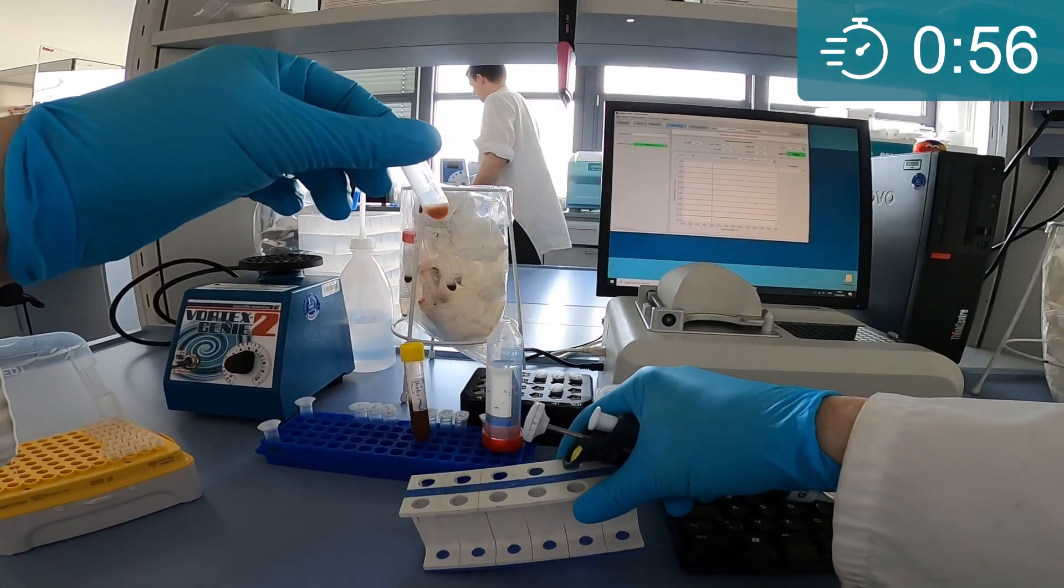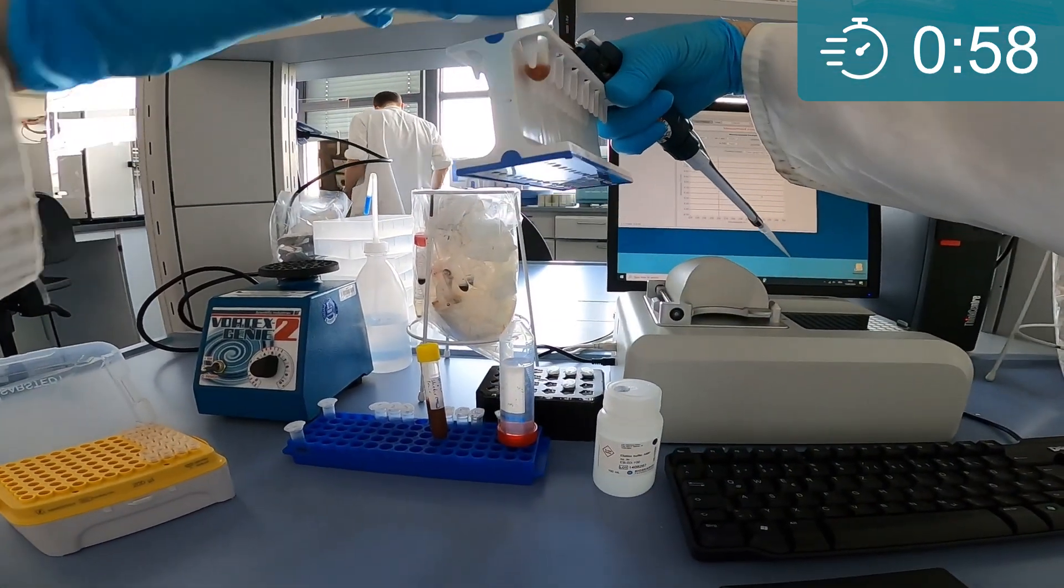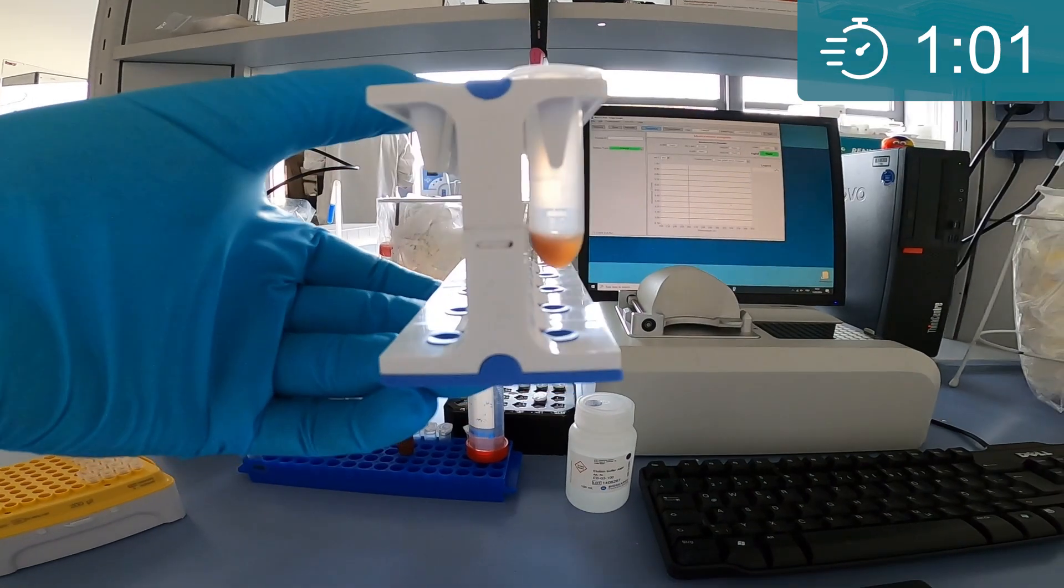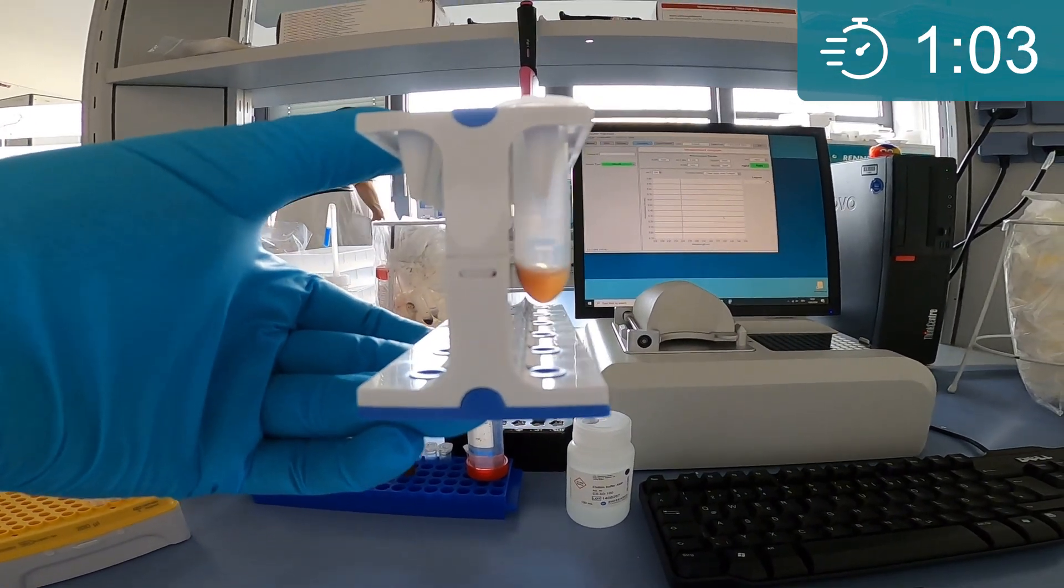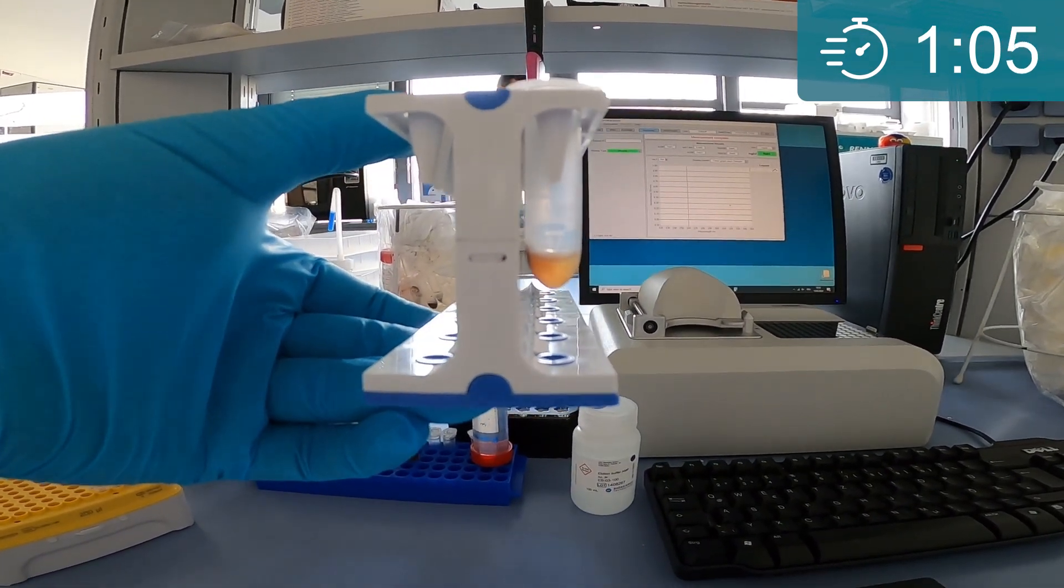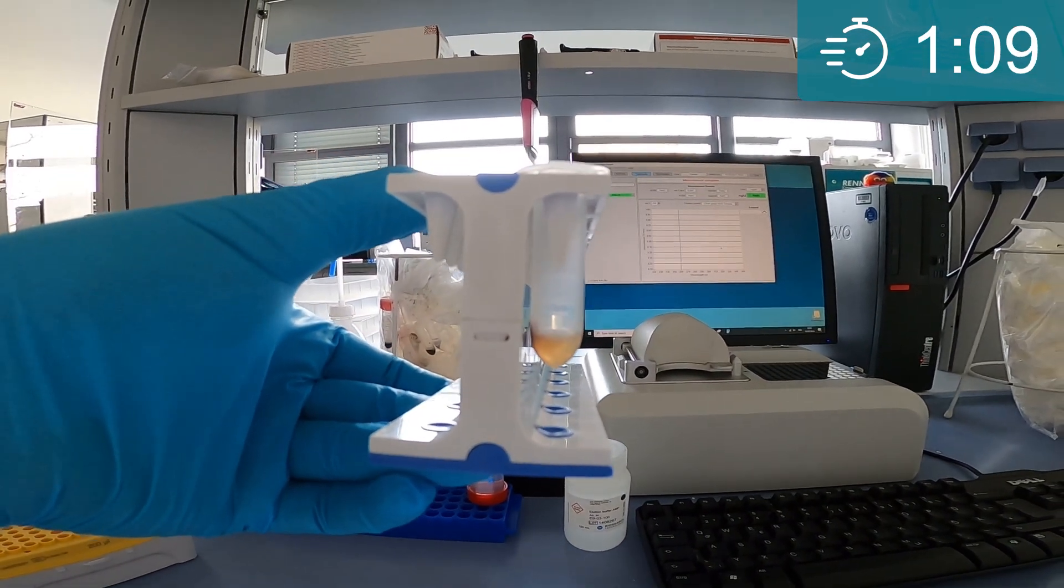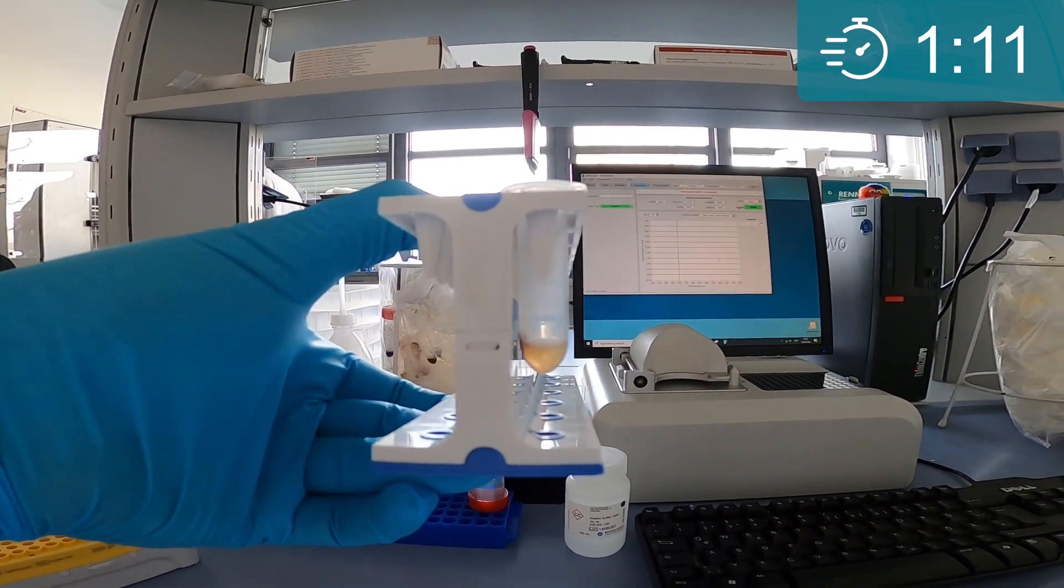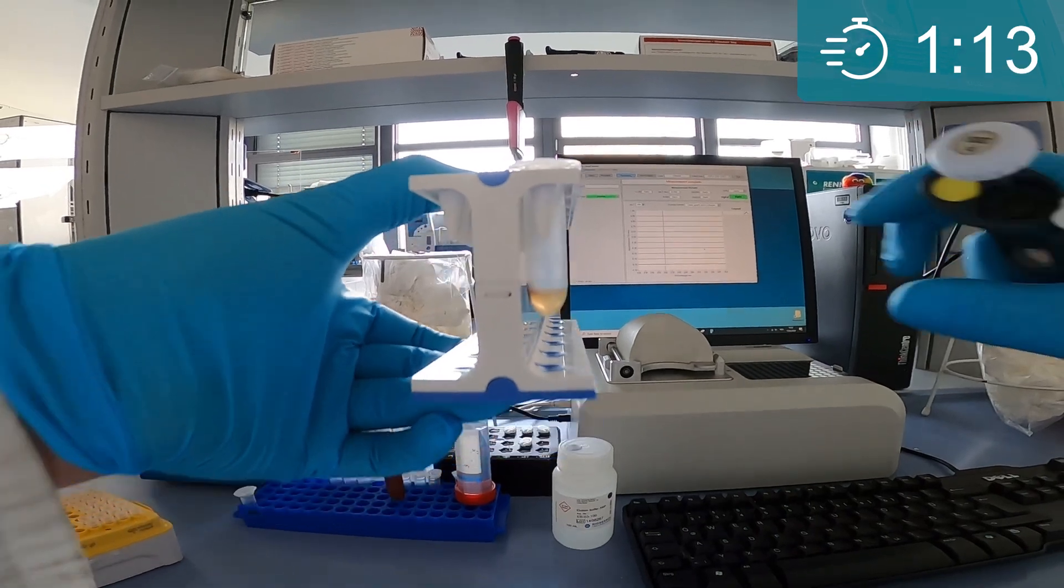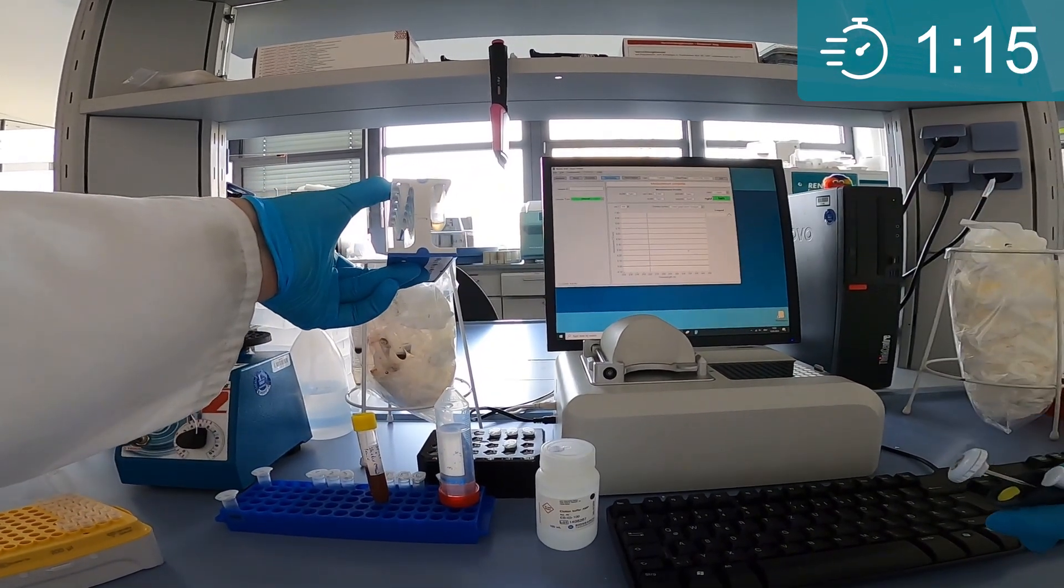To separate the DNA, you place the tube on a magnet until all the beads separate to the side of the well. The time it takes to separate the beads depends on the viscosity of your lysate, the lysate volume and the strength of your magnet. You can also use a centrifuge to spin down the beads.